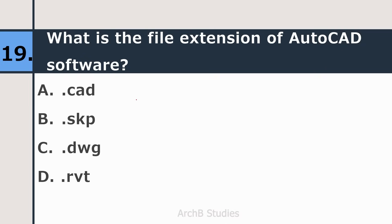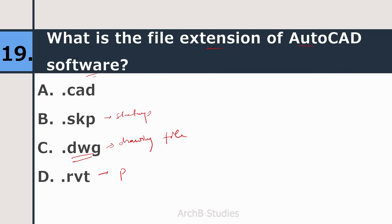Nineteenth question: what is the file extension of AutoCAD software — .CAD, .SKP, .DWG, or .RVT? The correct answer is .DWG, which is a drawing file. .SKP is for SketchUp and .RVT is for Revit.